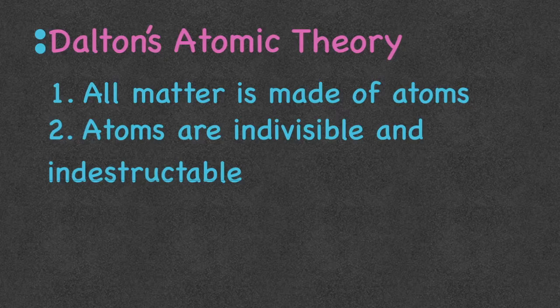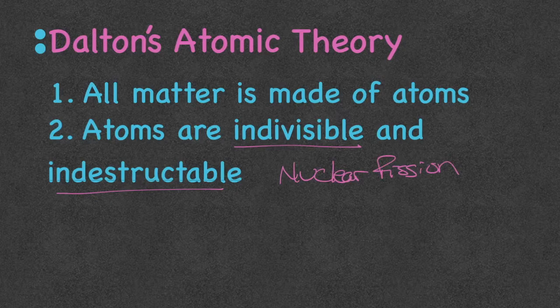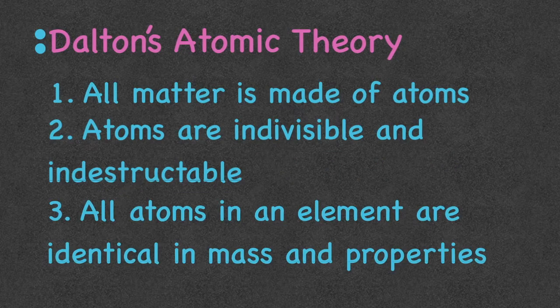This is one of the postulates we have proven to be not true, because we've learned we can divide an atom and destroy it. This is where we get nuclear fission, which is a topic for a later video. We also know that atoms are made of protons, neutrons, and electrons. The third postulate states that all atoms in an element are identical in mass and properties.